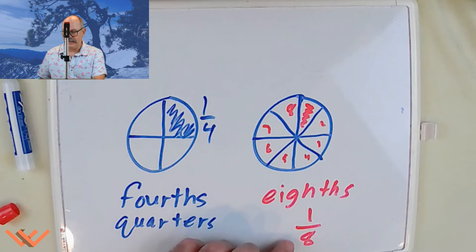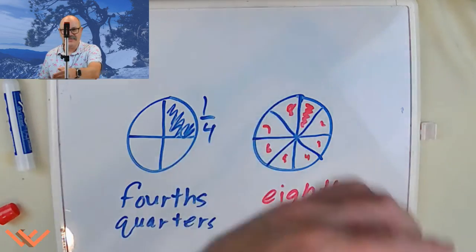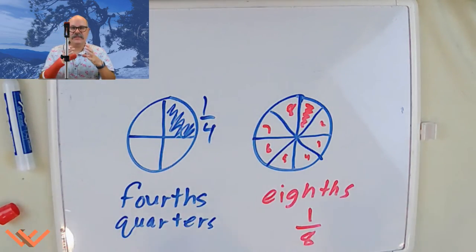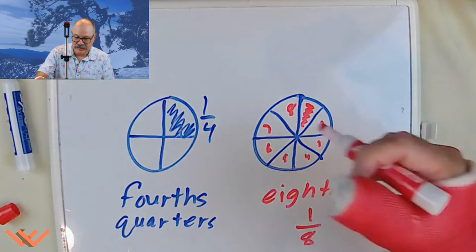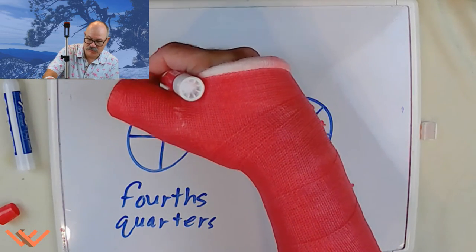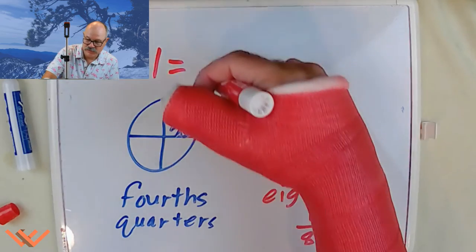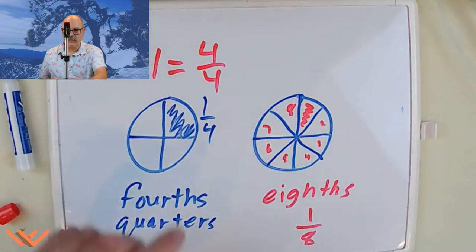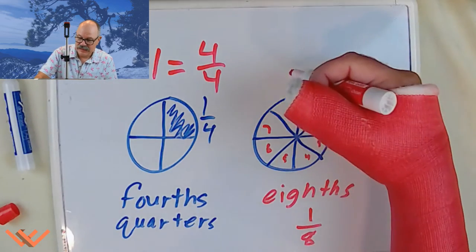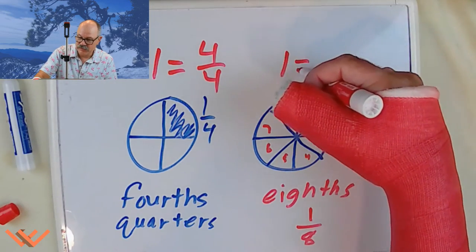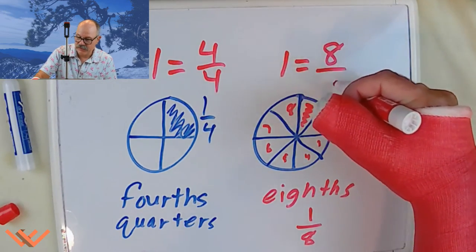We have one as the numerator, and the denominator is eight. Because it's one piece of eight. Eight is the whole. So we can say, this over here, this is equal to, the one is equal to four over four. Four pieces over four pieces. And this is one is equal to eight over eight.